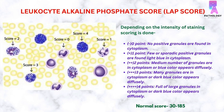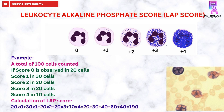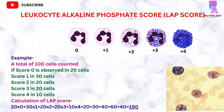The normal reference range of leukocyte alkaline phosphatase score is between 30 to 185. To calculate the LAP score on a slide, when it is stained by the LAP stain, we count a total of 100 cells and then scoring is done. For example, if score 0 is observed in 20 cells, score 1 in 30 cells, score 2 in 20 cells, score 3 in 20 cells, and score 4 in 10 cells, then the LAP score is calculated by multiplying the number of cells by the score and summing: (20×0) + (30×1) + (20×2) + (20×3) + (10×4) = 190.